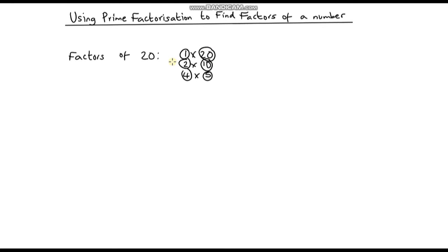Now there is another way we could do this, and that is using prime factorization. The first thing I'm going to do is break 20 down into the product of its prime factors. So 20 is equal to 10 times 2. I could have used 4 times 5, but in the end we'll still end up with the same answer.